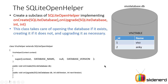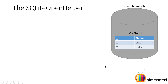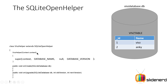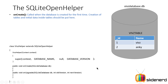onCreate is called when the database is created for the first time. Creation of the tables and the initial data inside the tables, if any, should be put inside the onCreate method. In other words, you are going to write the CREATE TABLE statement inside the onCreate method of your SQLiteOpenHelper.